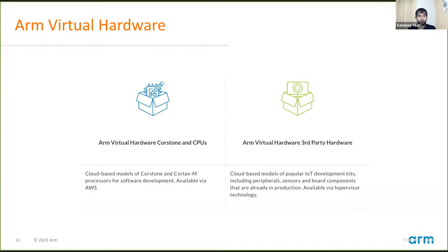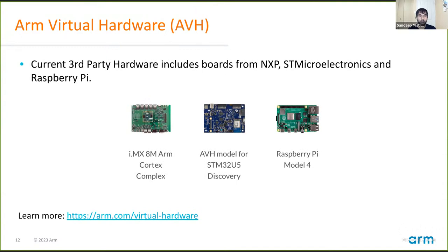The third-party hardware offering provides cloud-based models of popular IoT development kits, including peripheral sensors, boards, and components already in production. It's available as a hypervisor technology where the server in the cloud is actually running an ARM-based processor, so if the model can run ARM instructions natively, it will — giving very good performance. The third-party hardware currently includes ports from NXP, ST Microelectronics, and Raspberry Pi.